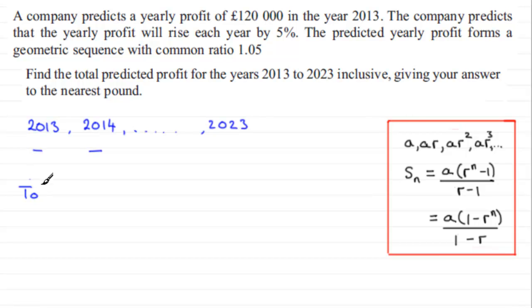Okay, so we can now say that the total profit is going to equal S11. And it doesn't matter whether we use this formula or this one. I'm going to use this one here. Do experiment, okay? We tend to use this one though when the common ratio is more than one. But it doesn't matter, you can use this one as well.